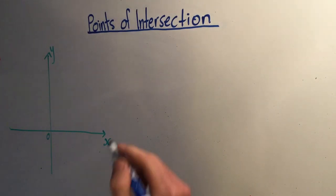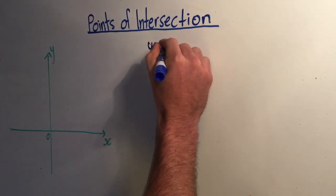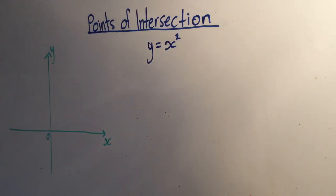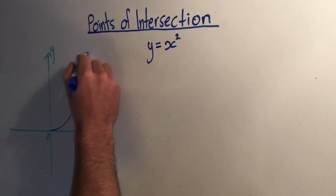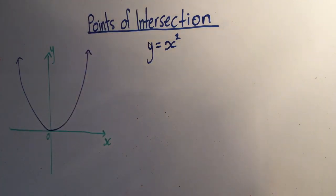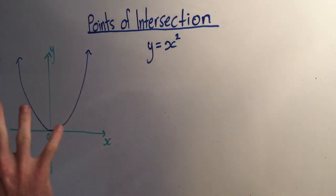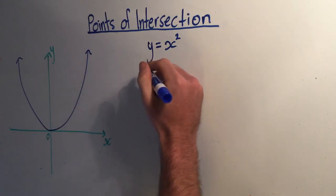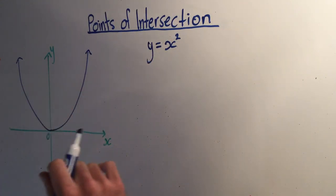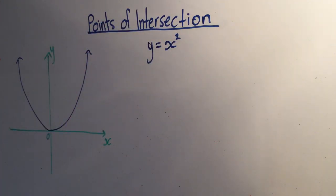Let's look at the situation where we have our first line given by the equation y equals x squared. We all know what that looks like, and I'm going to draw it on this graph over here. That is simply a parabola that looks something like this.